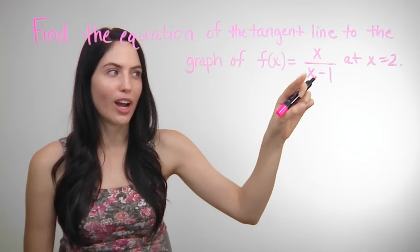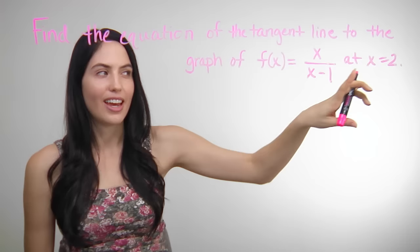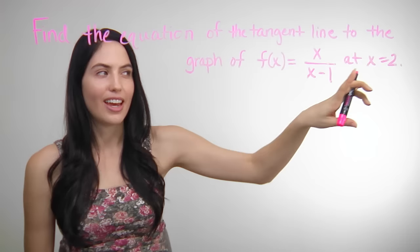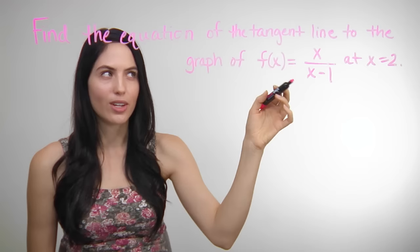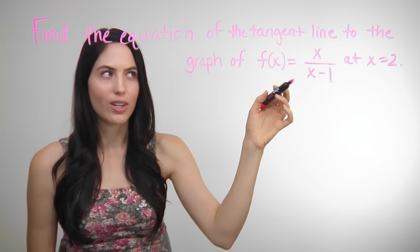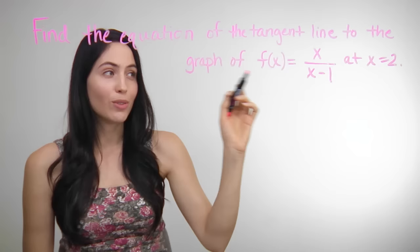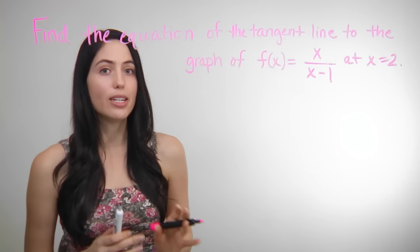Say you have f of x equals x over x minus 1, and you have to find the equation of the tangent line at x equals 2. This looks a lot more complicated, but the truth is it's the same four steps no matter how complicated your f of x gets. As long as you know how to take f prime of x — the derivative — you can still do all the same steps and get the equation of the linear tangent line.